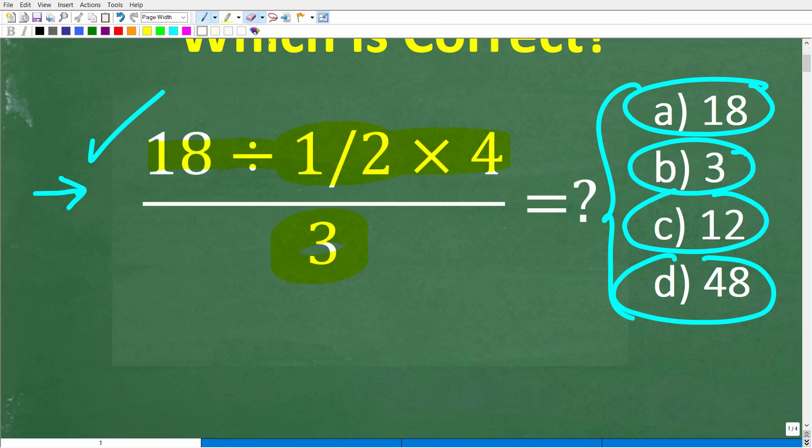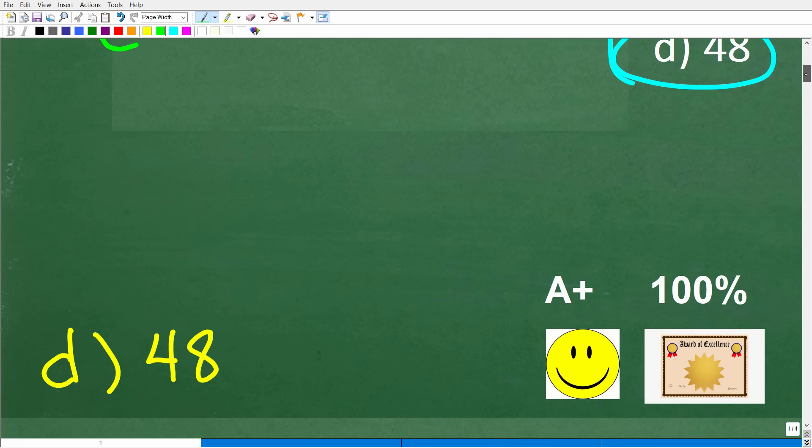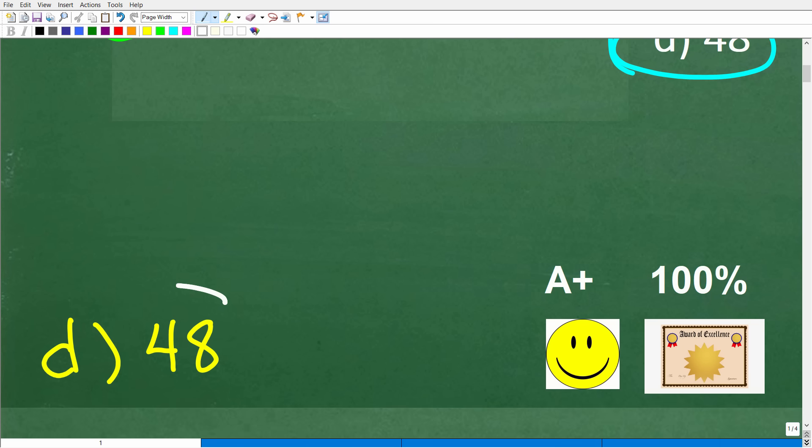All right, so here again is the problem. And there is no time limit, and I would definitely encourage you to take out a piece of paper and a pencil and write out each step. So try not to do this in your brain, but let's take a look at the correct answer. The correct answer is d, which is 48.